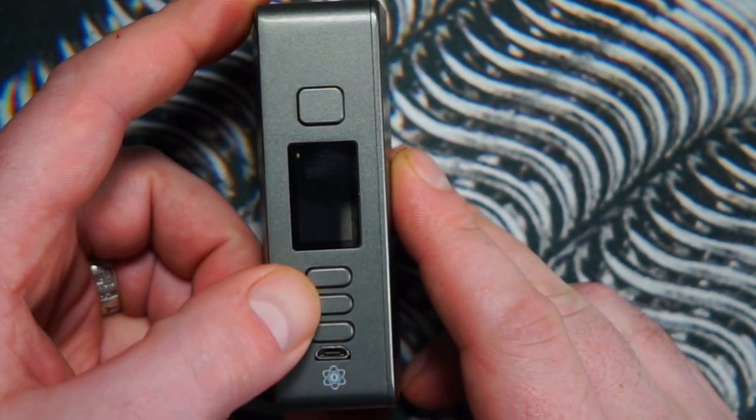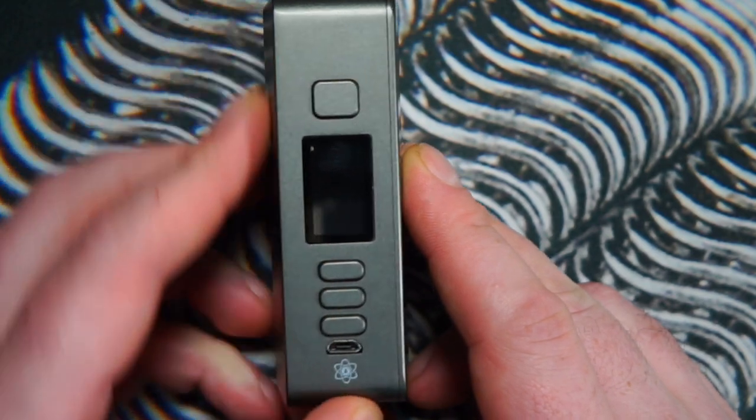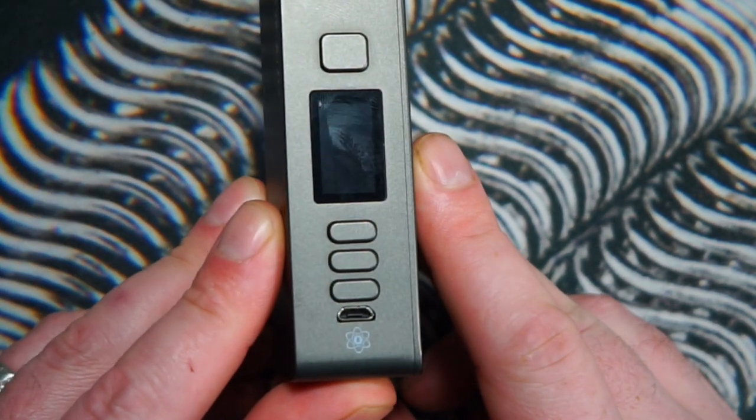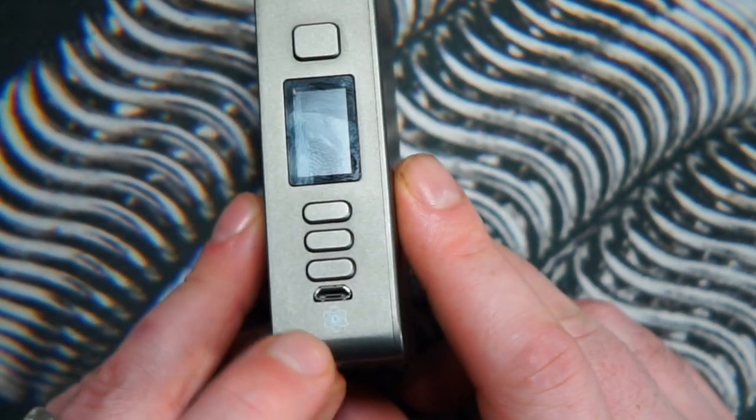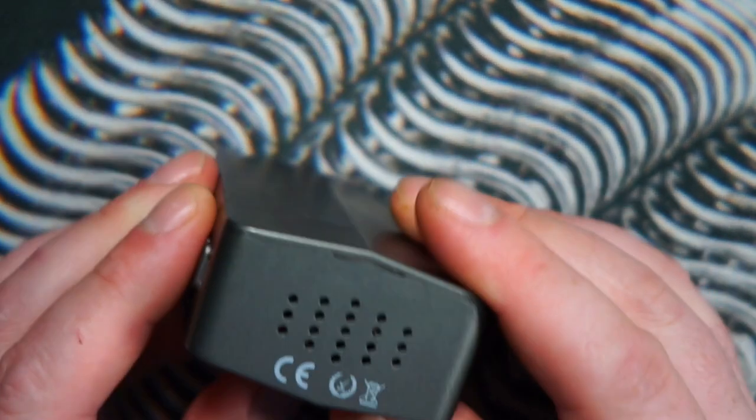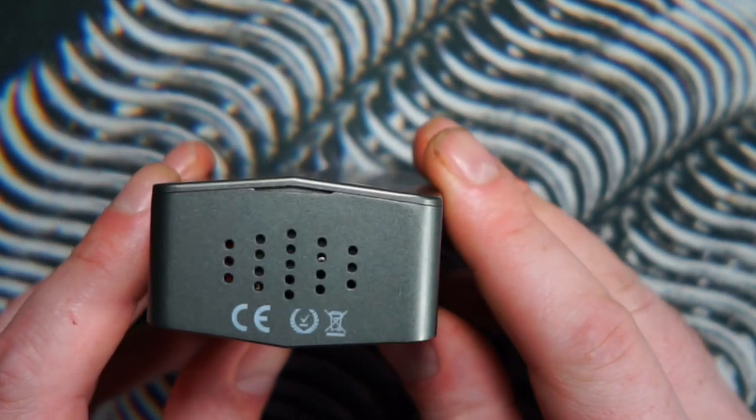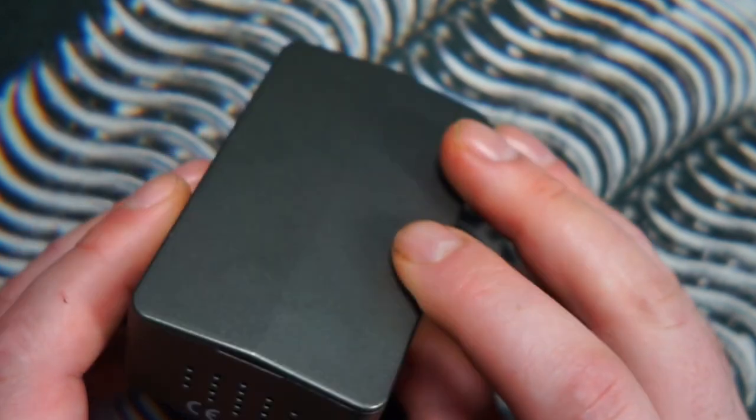So the usual fire button. Up, down, and select. And then you have your USB connection. And then the Evolve logo there. On the bottom, you have your battery vent and your CE mark and your dump vape in a bin.